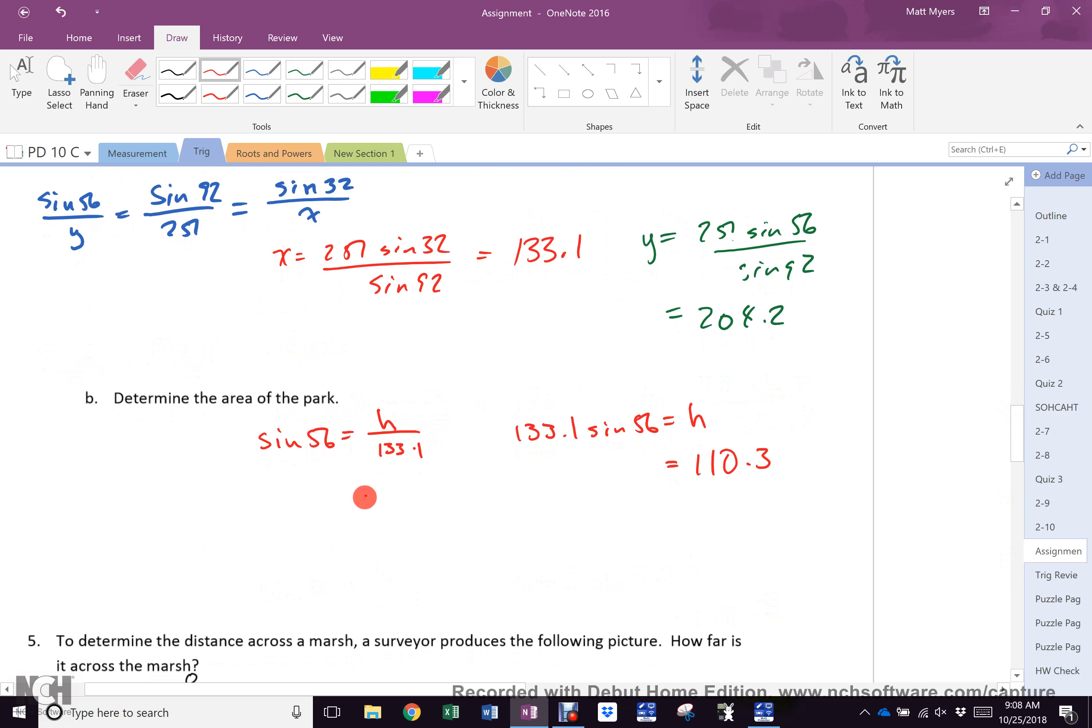So, 133.1 sine 56 equals h is 110.3. So, then the area equals base, 251 times height, 110.3 divided by 2. 13,842.65.